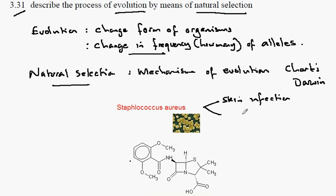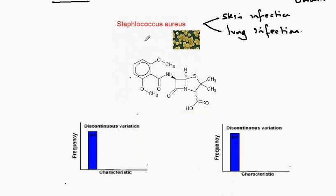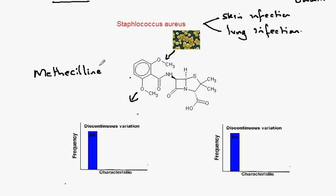Staphylococcus aureus causes skin infections, but it also causes infections of the lung and is associated with infections from wounds, possibly including surgical wounds. The normal form of Staphylococcus aureus is susceptible to being killed by this molecule here, called methicillin, which is a type of antibiotic. Those Staphylococcus aureus which can be killed by it are described as the susceptible forms.